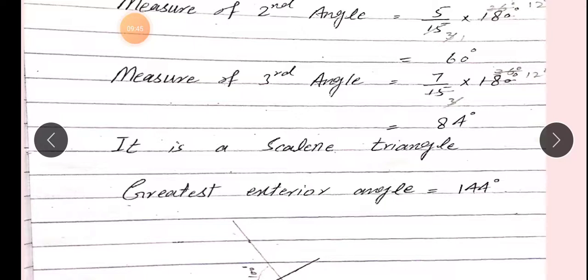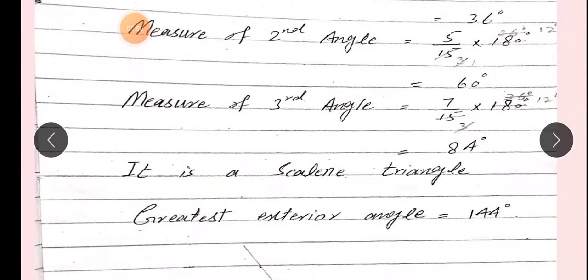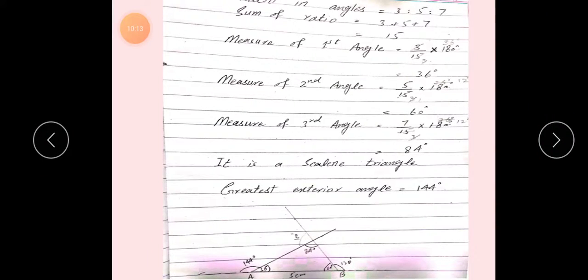Ab third angle find karenge. Measure of third angle: third ratio kya tha? 7. So 7/15 × 180. Cutting: 180/15 = 12, then 12 × 7 = 84 degrees. To dekho, hamare paas teen angles aa gaye: first hai 36 degrees, second hai 60 degrees, aur third hai 84 degrees.